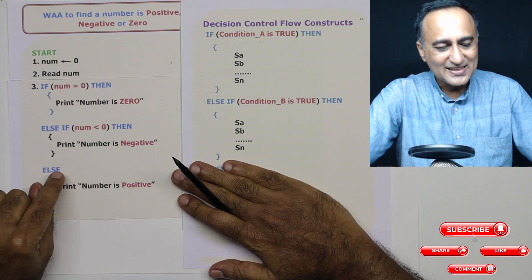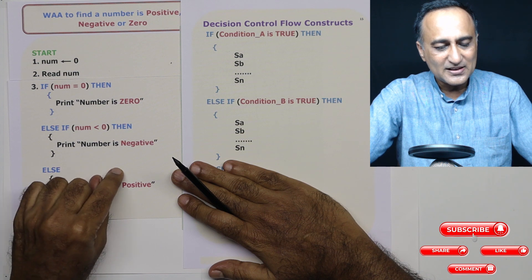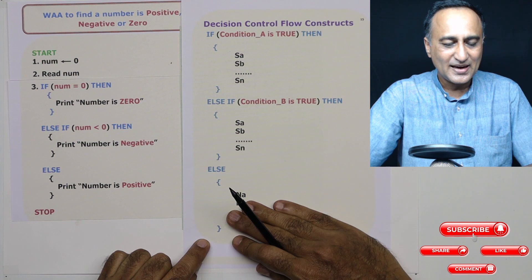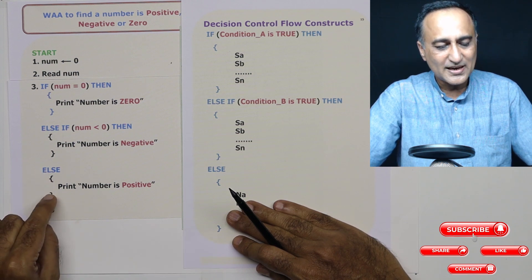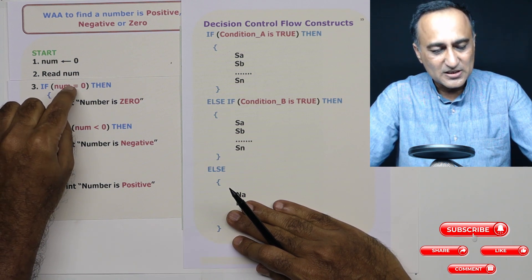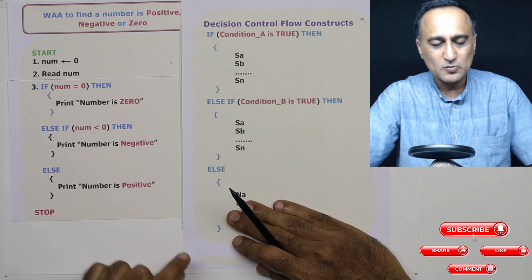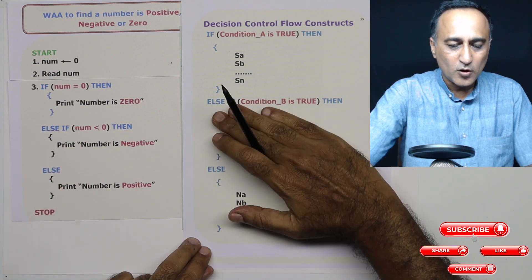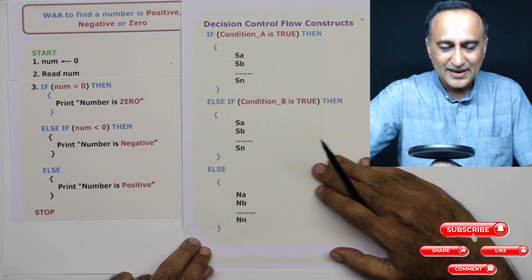Here also I could have said else if number greater than zero, then print number is positive. So in that case, I would never have used the else. But it makes sense to use the else because if a number is not zero, not negative, it has to be positive. So I don't need to do that extra check. But you can always use instead of an else, you can use an else if here.